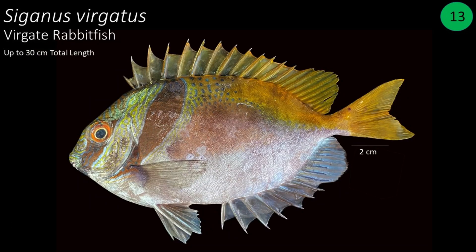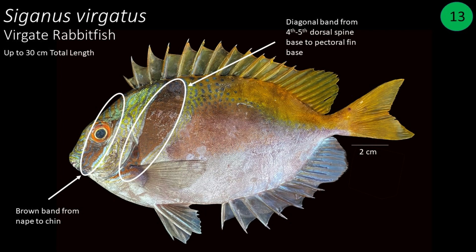Number 13: Siganus virgatus, commonly called virgatus rabbitfish. It can grow up to 30 centimeters in total length. There is a brown band running diagonally from nape to chin, and another band starting from the base of the fourth to fifth dorsal spine which ends at the base of the pectoral fin.